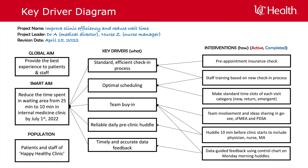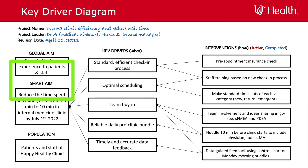Now let's look at its components. The global aim is to provide the best experience to patients and staff — this is the motivation behind this work, why is this work important. The smart aim of the current effort is focused at reducing the wait time. The team aims to reduce the average wait time from the current 25 minutes to 10 minutes in the next four months by July 1st.